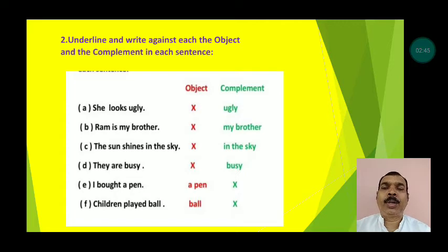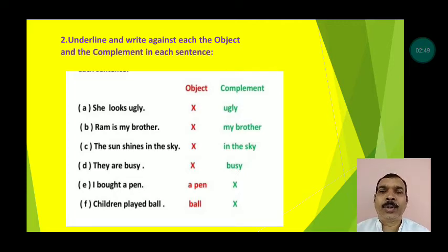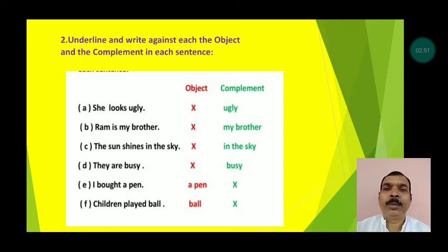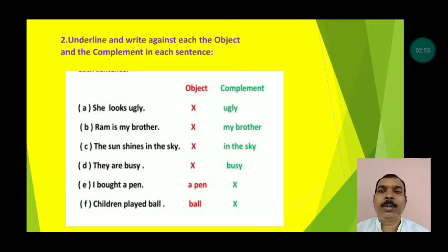'I bowed a pen' — object is 'a pen'; no complement. 'Children played ball' — object is 'ball'; no complement.